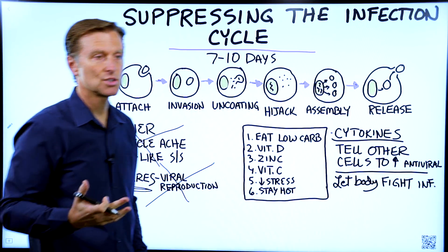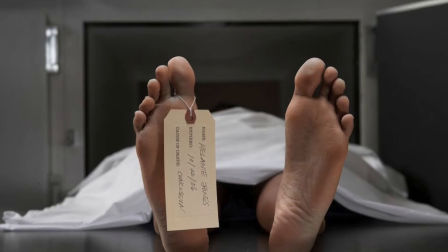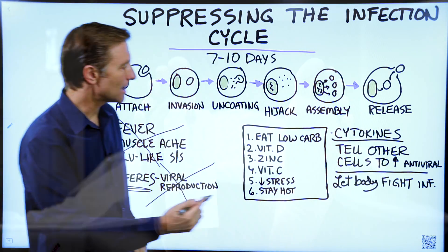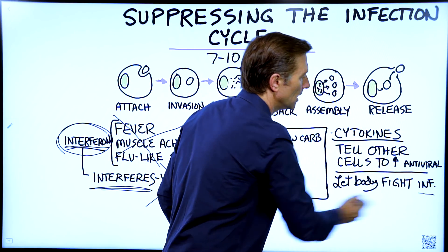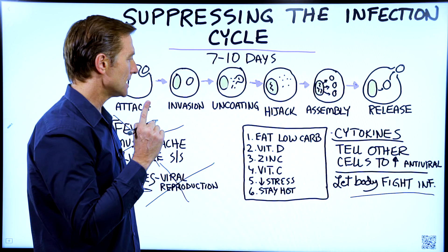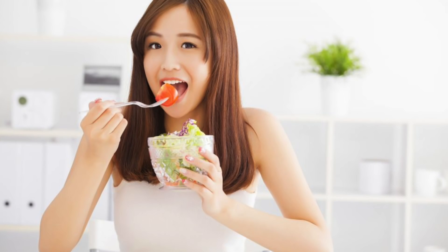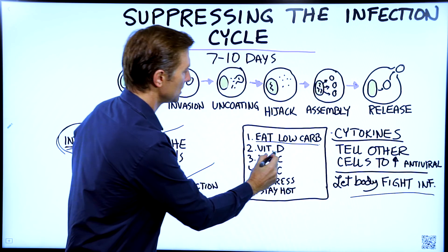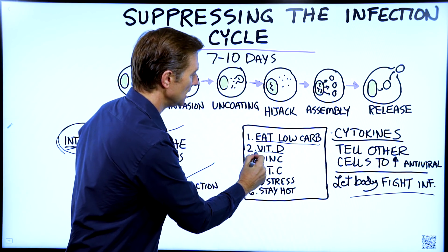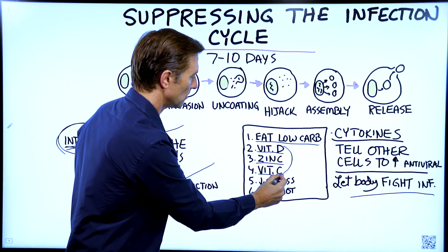Also, there are even studies that show that taking something to suppress the immune system increases your mortality rate. Ideally, the best thing to do is let your body fight the infection and support the immune system by getting on an eating plan that lowers your carbohydrates, enhances vitamin D, zinc, and vitamin C. These are crucial.